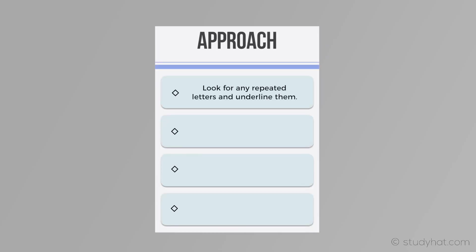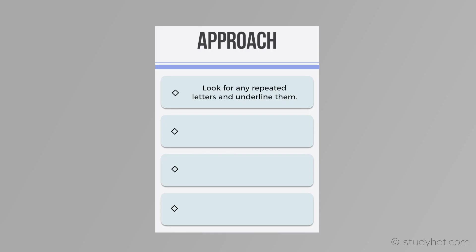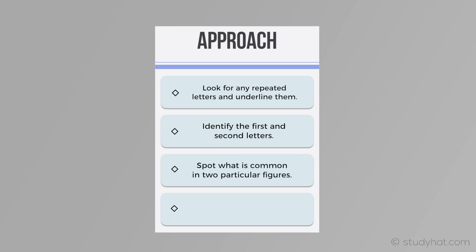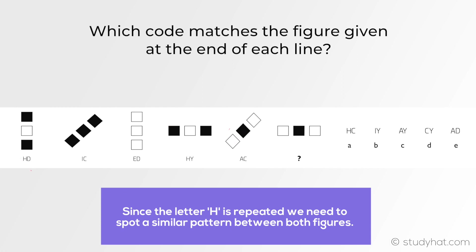The first step is to look for any repeated letters and underline them. Coded questions will have a repeated letter, and if you can spot that, what you want to do is find out what is similar with both of those letters. The second step is to identify the first and second letters as soon as possible. Remember, what you're looking for is a common feature — use your observation skills to make links and find what's common in those two particular figures. If you find the letter B in one possible answer and B in another, you can then figure out how they are both linked.